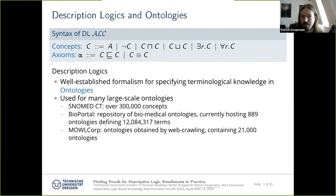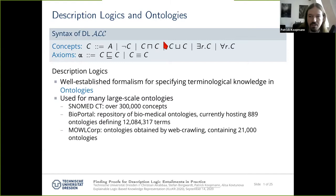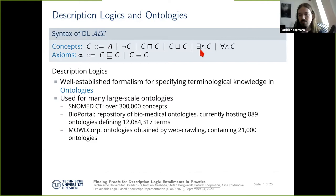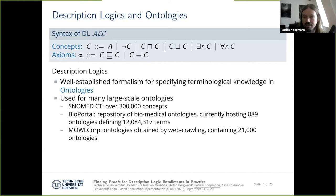First, a quick recap on description logics and ontologies for those who don't work with these daily. At the top we see the syntax of a classical typical description logic. The basic building blocks are concepts, composed using logical operators, concept names, and role names — essentially like predicate names. You put concepts in relation via axioms, saying one concept is a specialization of another, or that two concepts are equivalent, and by using many such axioms you define an ontology.